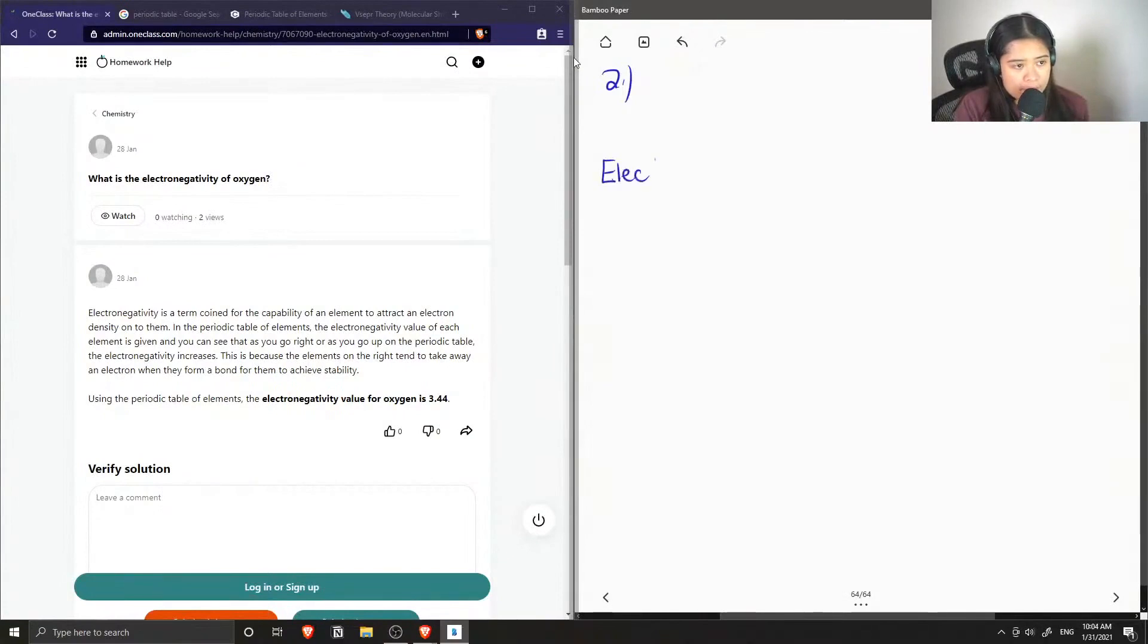So first let's define what electronegativity is. It is the capability of an atom to attract an electron.